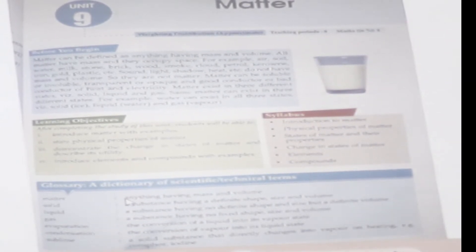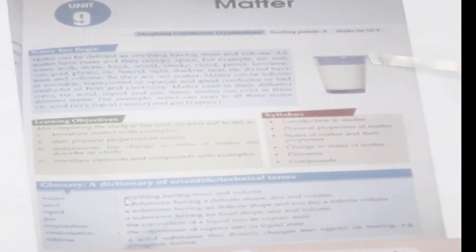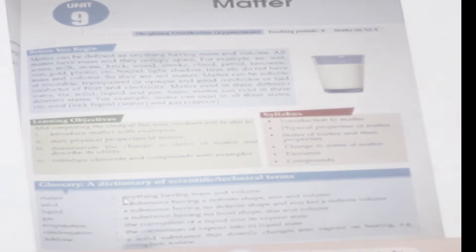Wood, petrol, kerosene, smoke, cloud, iron, gold, etc. contain mass and occupy space. For example, this book is also a matter because the book has mass and its volume. So your book is also known as matter.